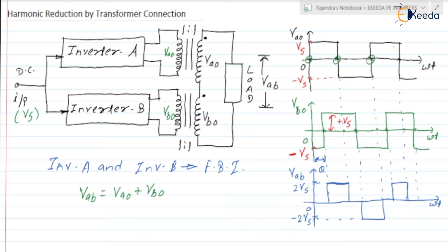Similarly, for the output voltage of inverter B, Vb0, instead of turning on switches S1 and S2 at ωt = 0, they are turned on after some delay. This delay is represented by angle theta, which is the phase lag. So Vb0 is lagging Va0 by angle theta. When S1/S2 are on, output is +Vs; when S3/S4 are on, output is −Vs.